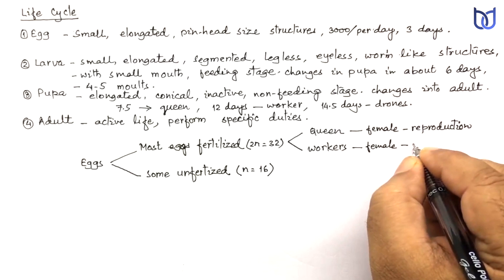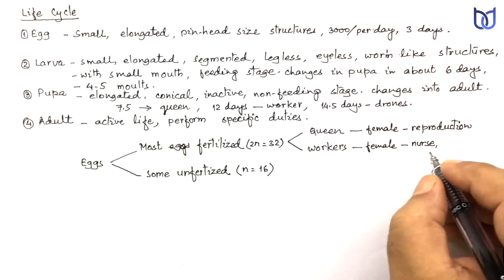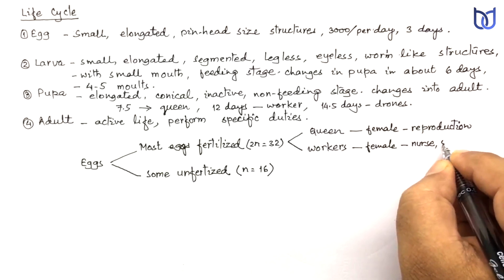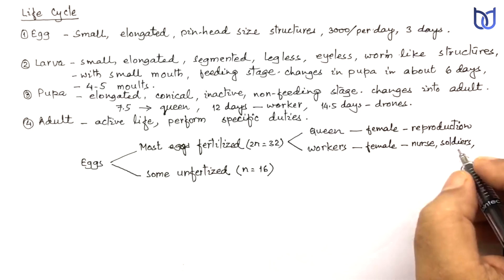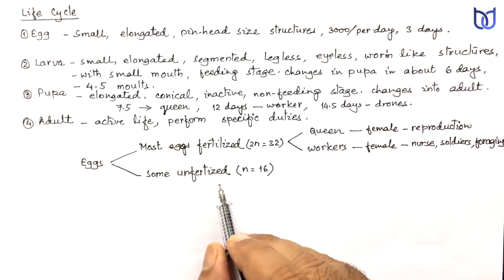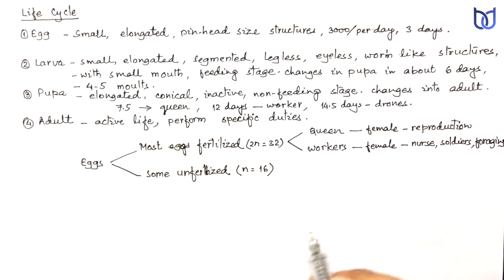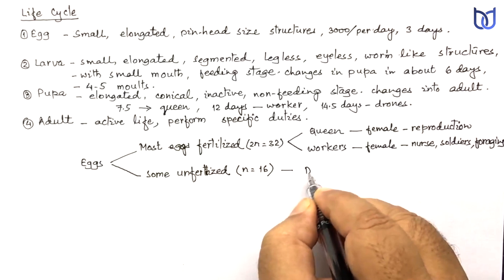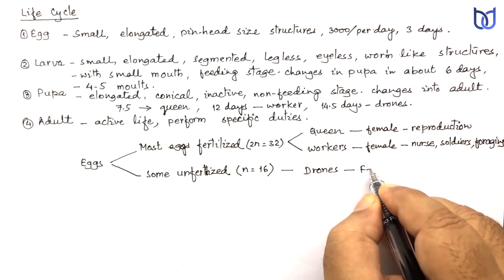Workers perform the duty of nurse, cleaning, feeding, and then perform the duty of soldiers providing protection. They also collect pollens and nectar from different flowers, so foraging also. When the egg is unfertilized, it develops into drones. And drones are meant for fertilization only.